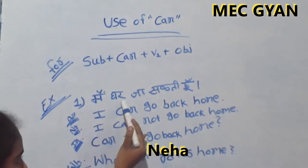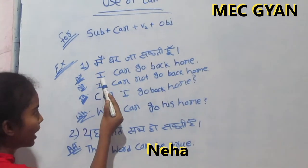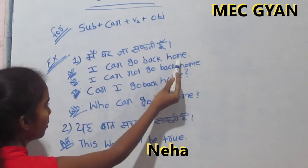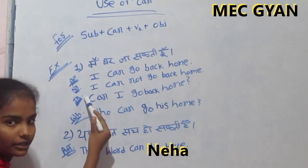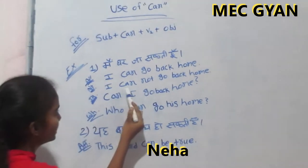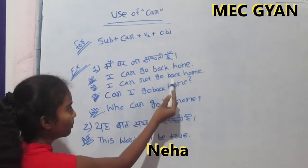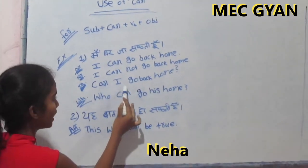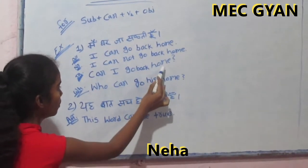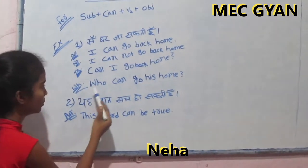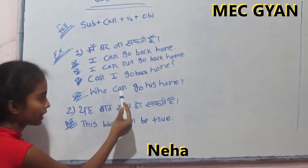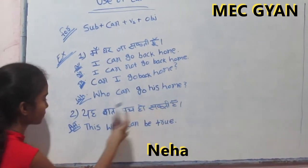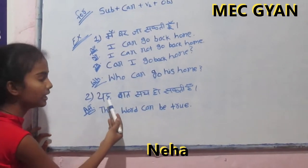First, M.A.S.E. and I can go back home. Negative: I cannot go back home. Question: Can I go back home? Who can go to his home? And second example: you can search here.